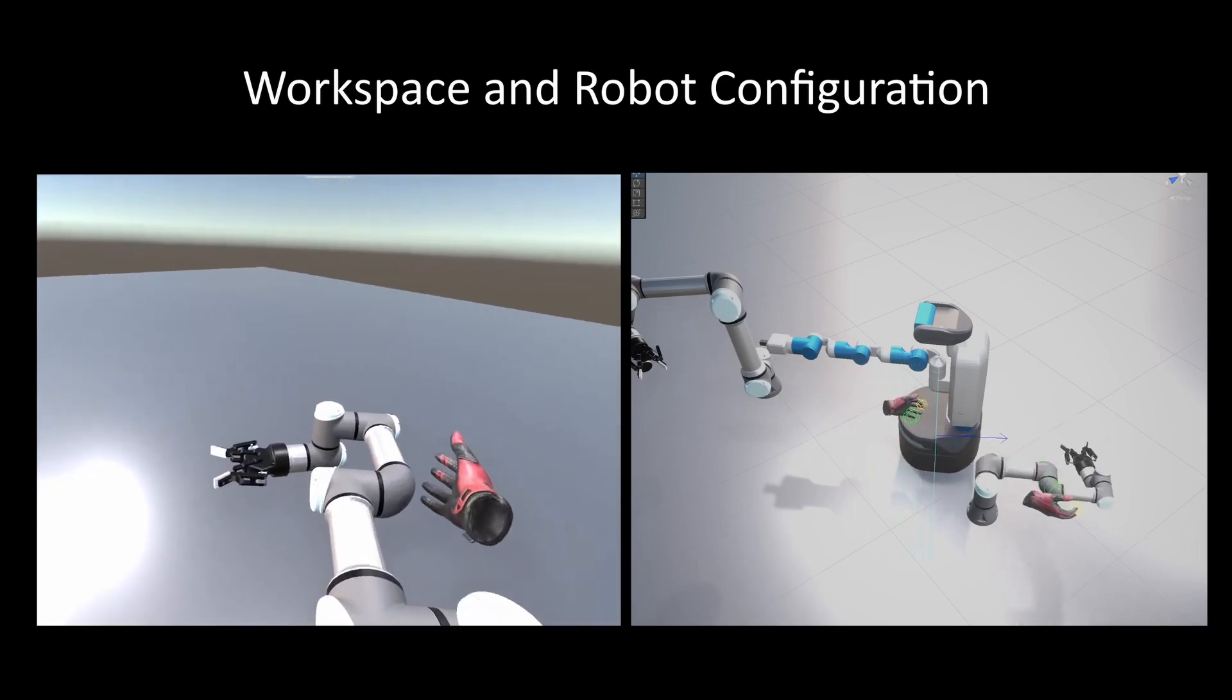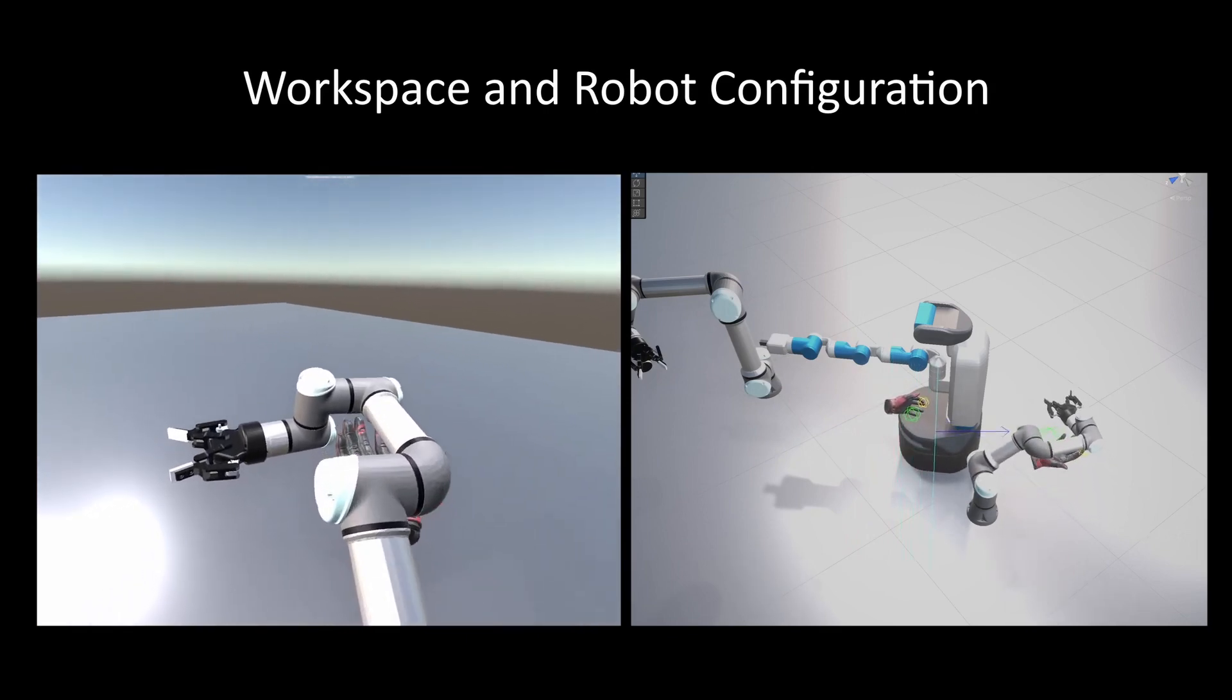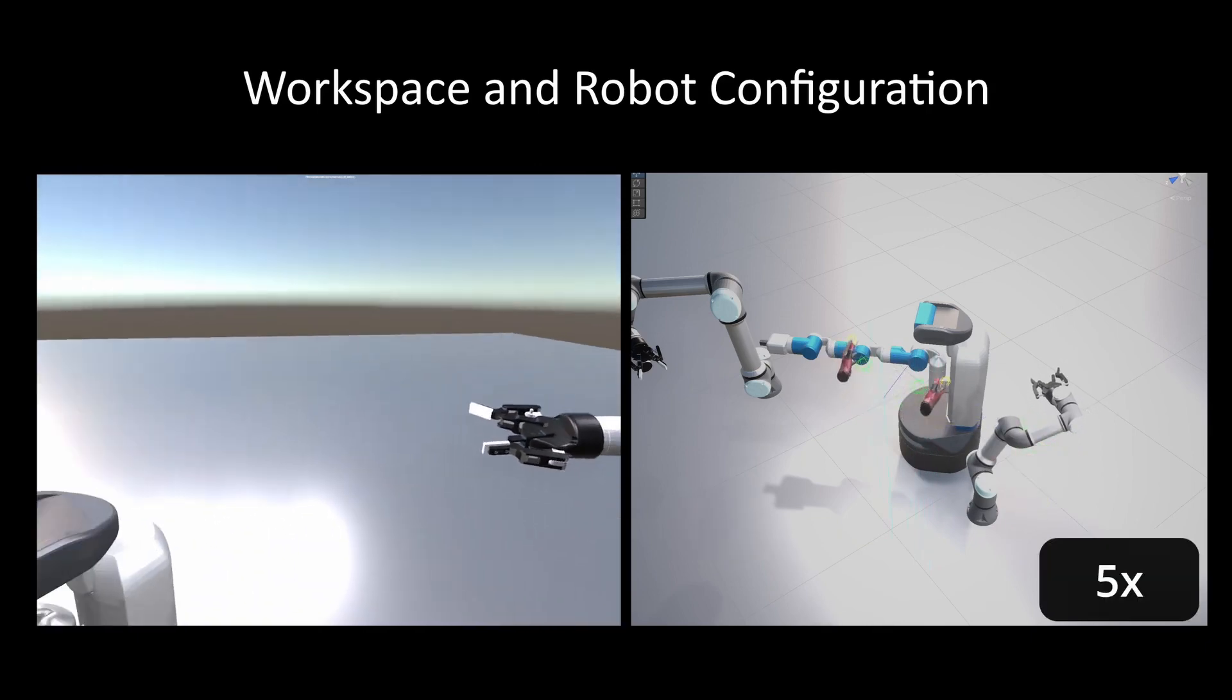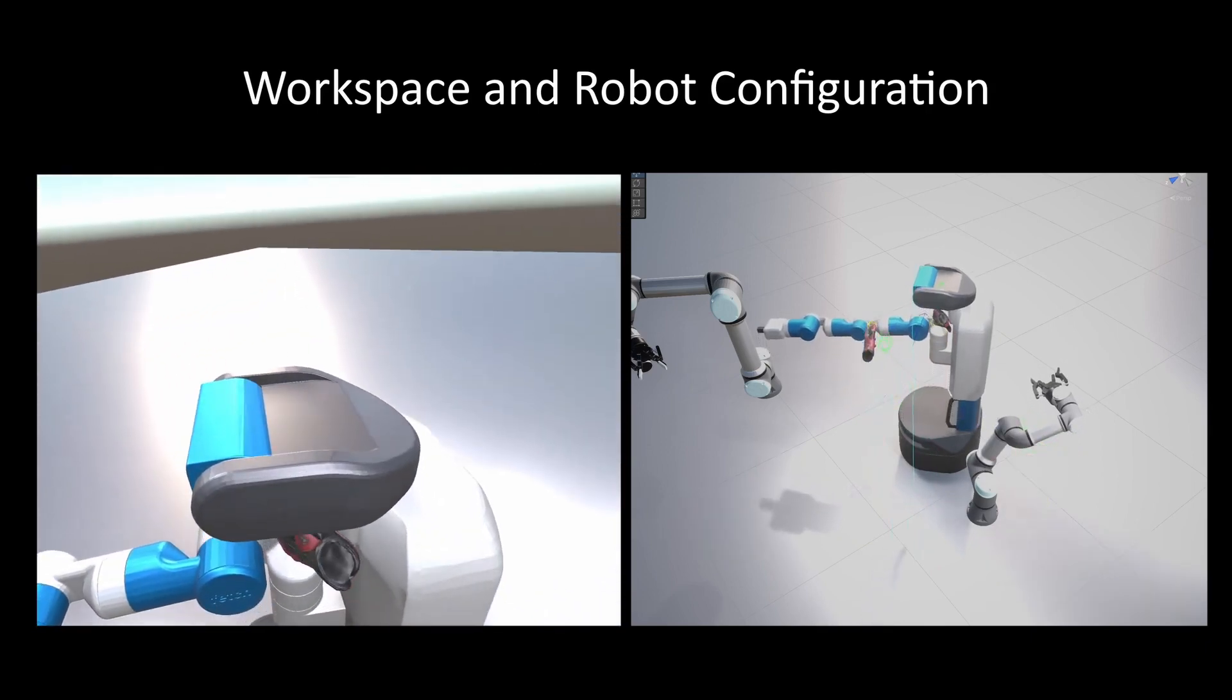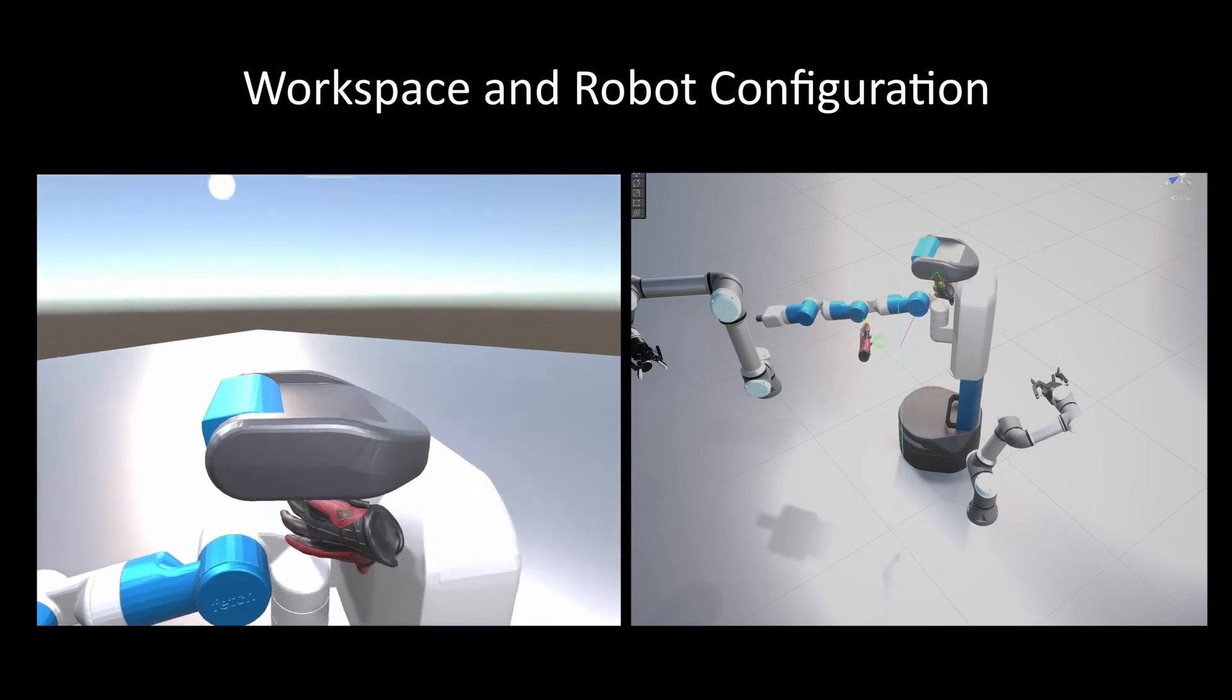Each robot can be seen to actuate properly, maintaining the kinematic order and characteristics. Robot-to-robot interaction is also possible.